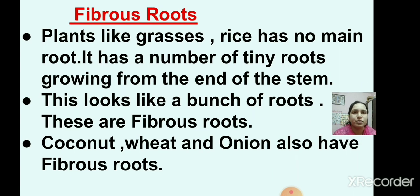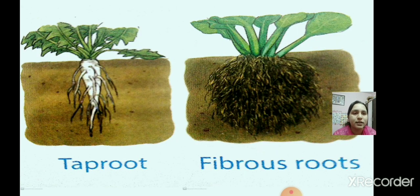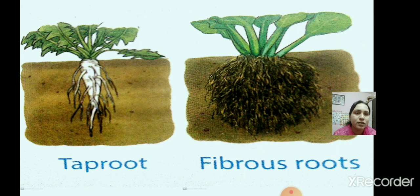Now about fibrous roots. Plants like grasses and rice have no main root. They have roots growing from the end of the stem — a number of tiny roots that look like a bunch. These are fibrous roots. Coconut, wheat, and onion also have fibrous roots. For example, radish has a tap root and spinach has fibrous roots.